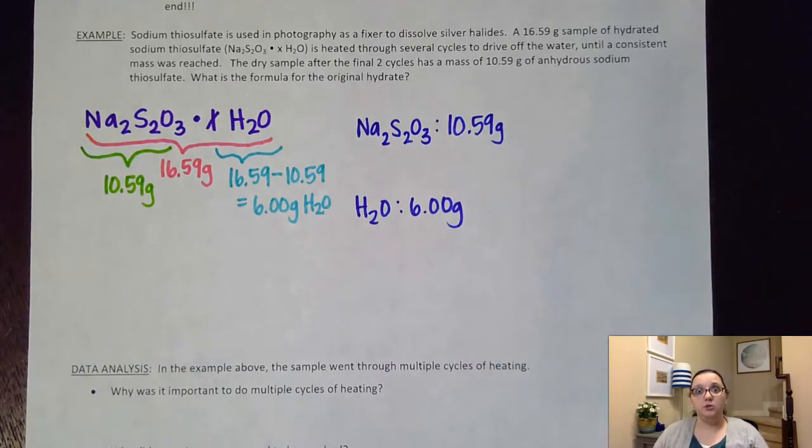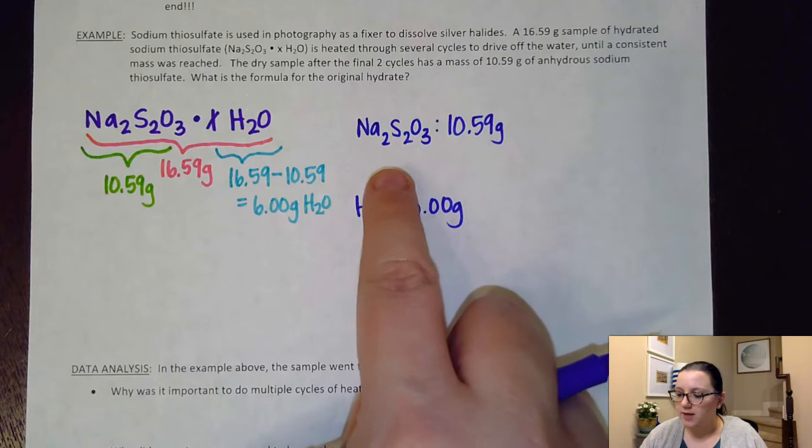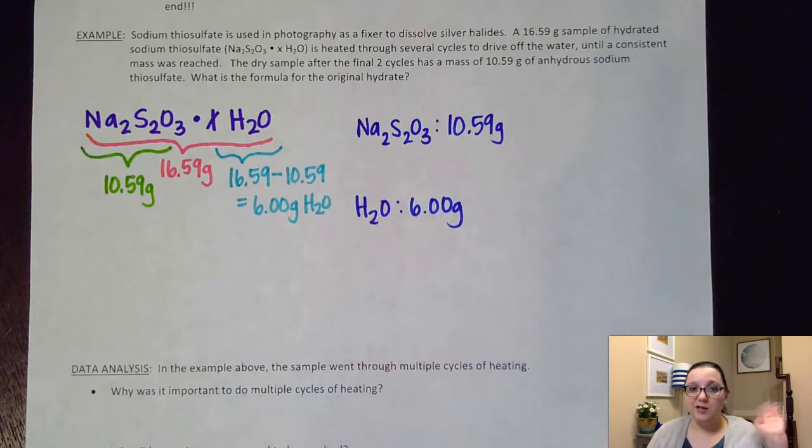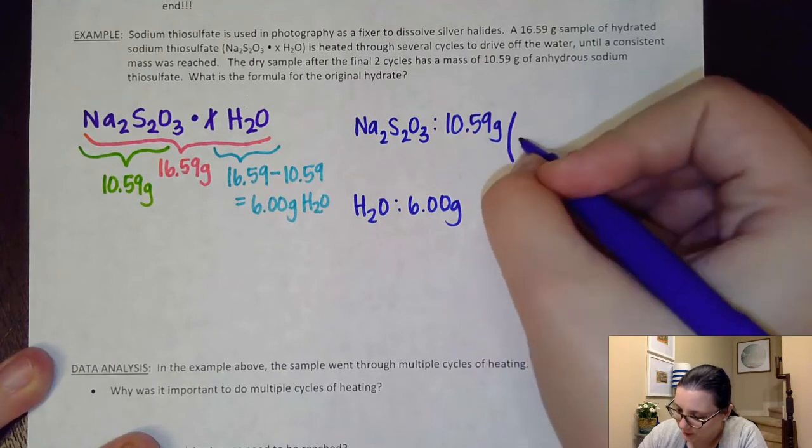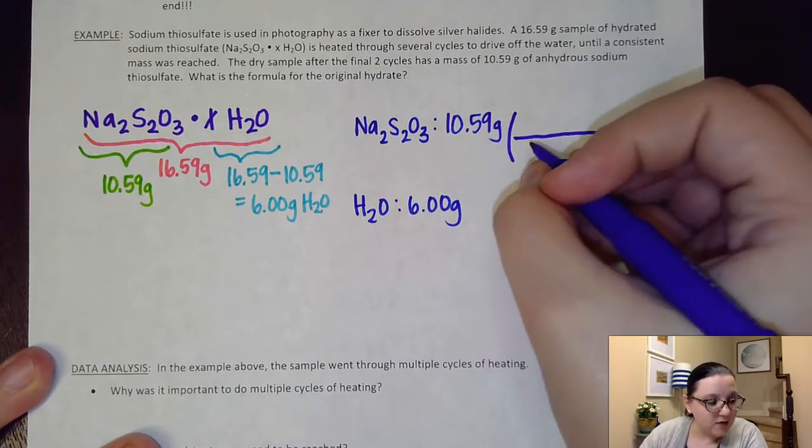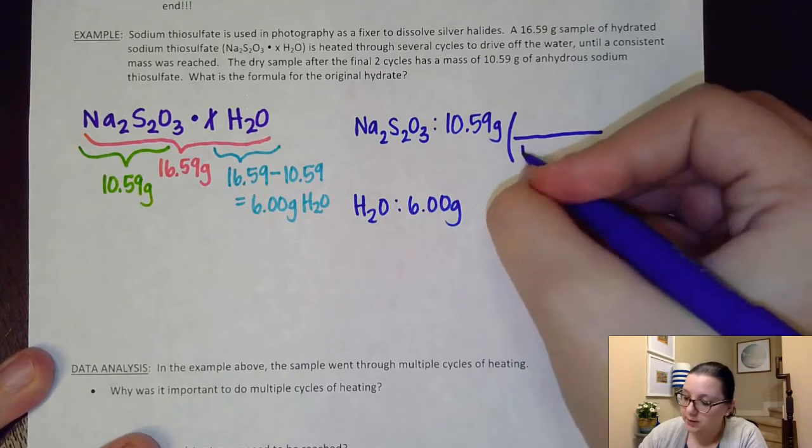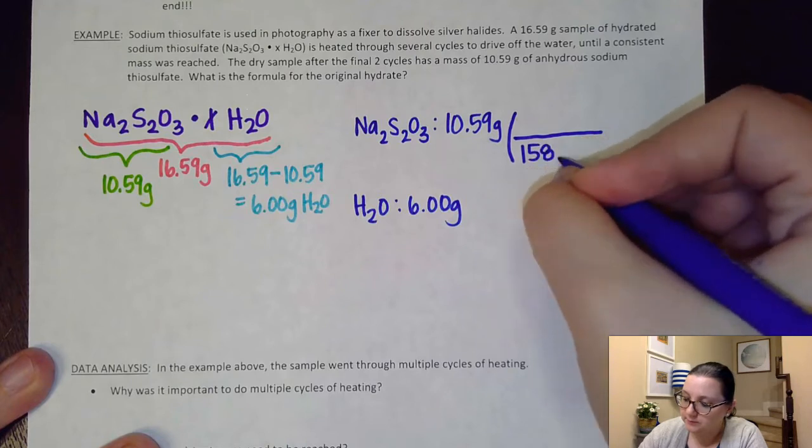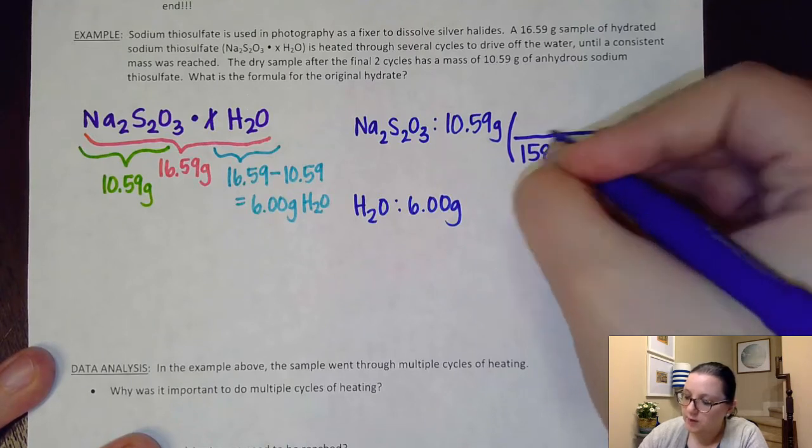And what I want to do is I want to do a mass to mole step. As a reminder, to go between mass and moles I would use the molar mass. So I would need to figure out my molar mass of Na2S2O3. Now I'm going to cheat because I already know the molar mass of it. I calculated it earlier. It has a molar mass of 158.10 for every one mole.